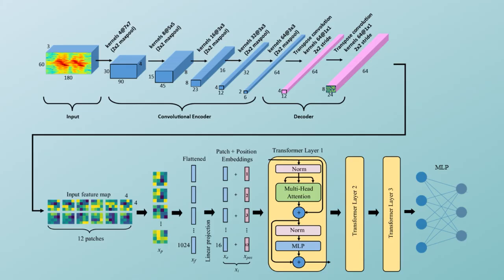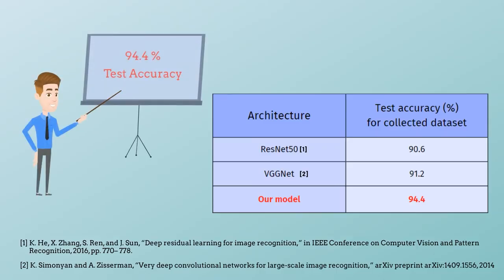A machine learning module is used to predict the gestures. Our module consists of three units as Convolutional Encoder-Decoder, Attention Module, and Multi-Layer Perceptron. This module achieved 94.4% accuracy on the collected dataset. We analyzed our dataset with several methods used in literature and our module outperforms those modules.